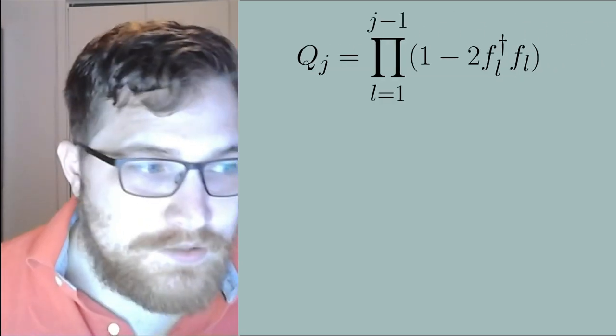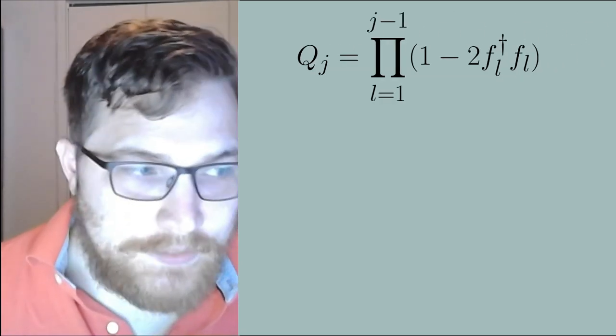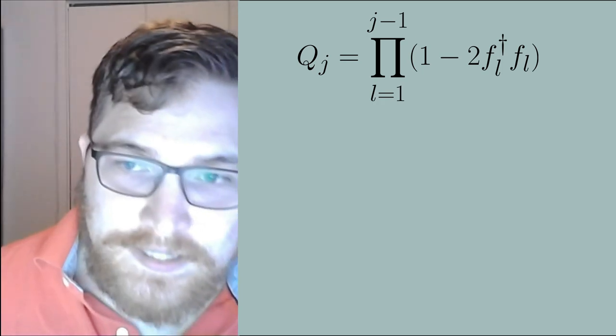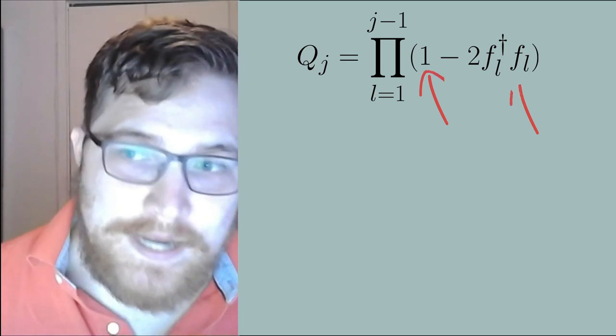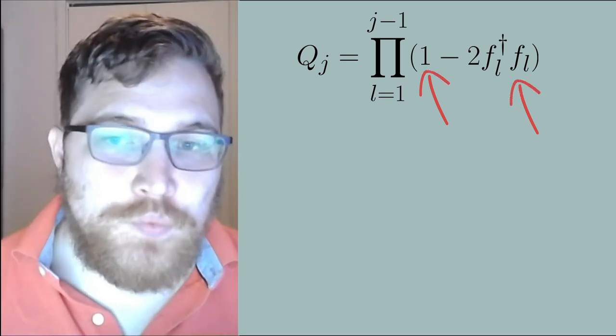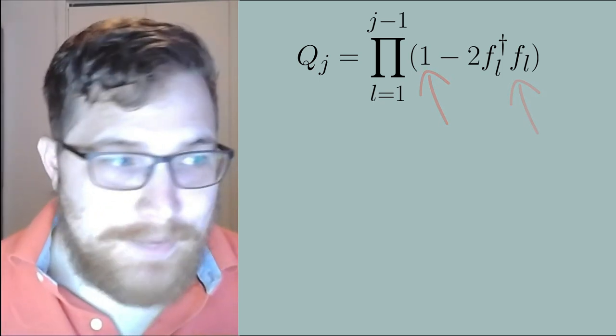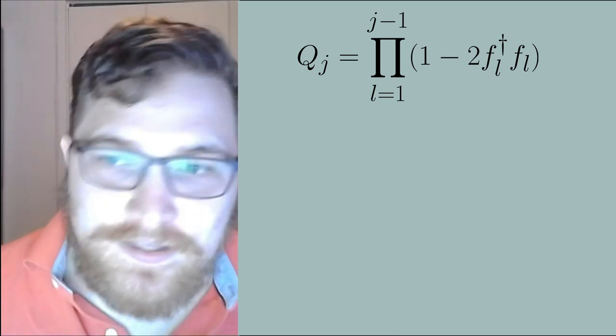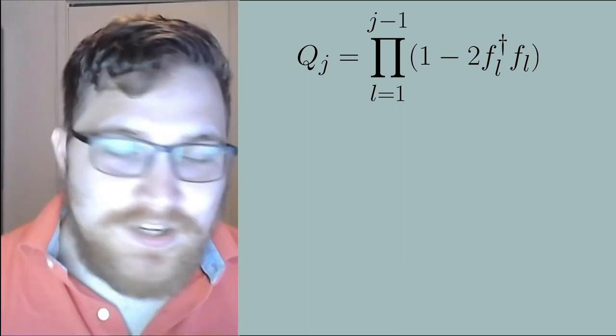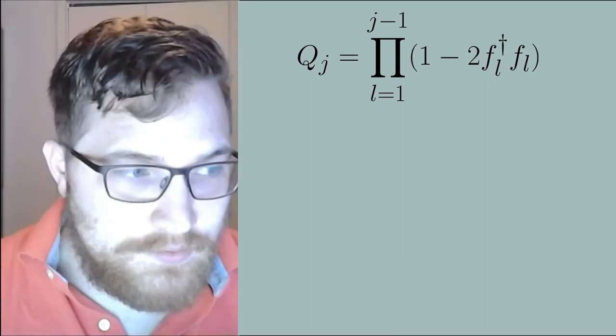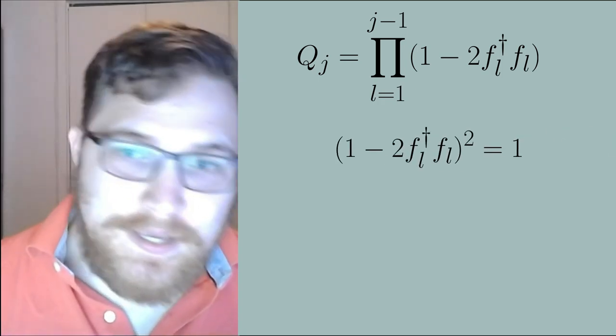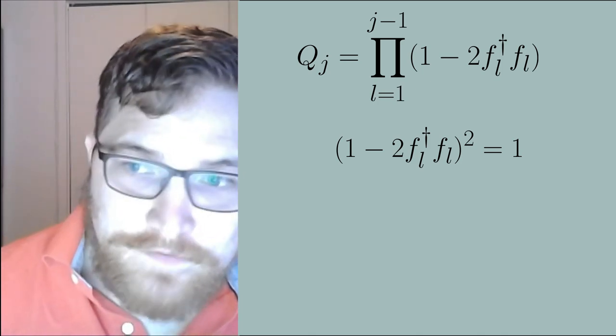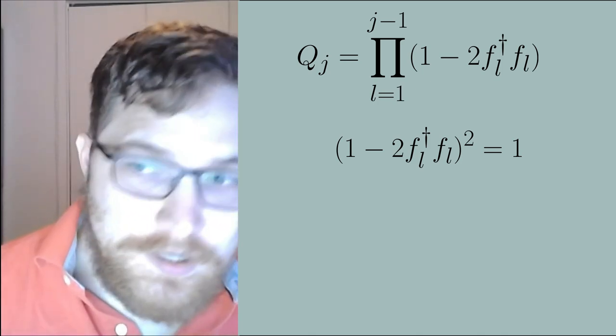Since the terms in the brackets inside the product are either an identity or a number operator the order at which we do this product actually doesn't matter. Another useful identity that you can work out is that each individual term in the product if you square that you get back the identity. This is seen quite straightforwardly from the properties of the number operators.